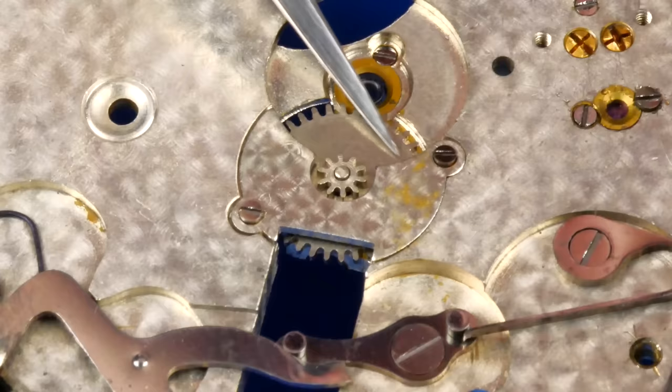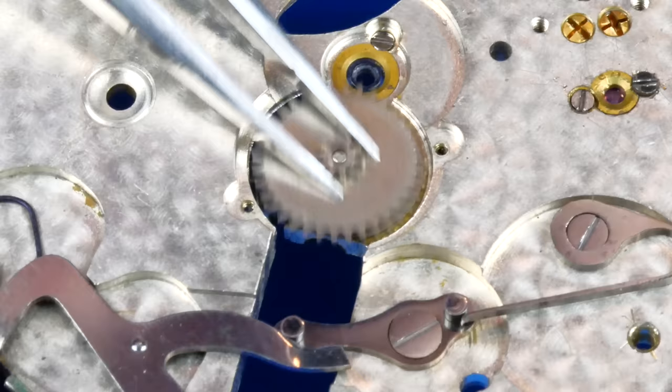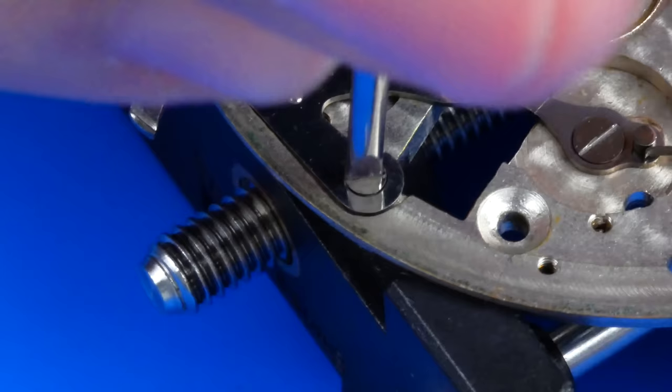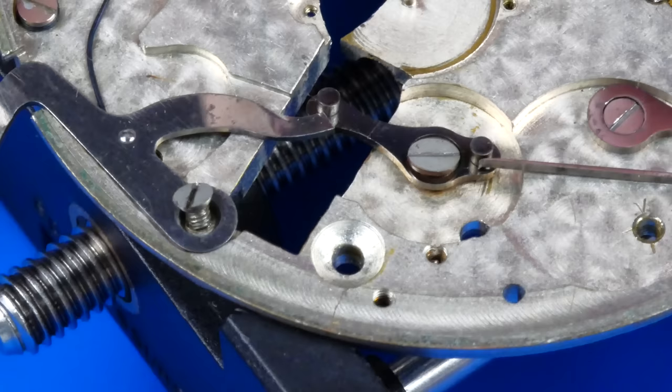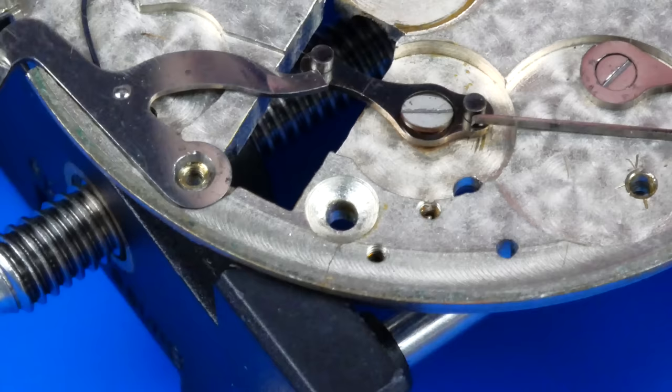The small bridge plate over the minute wheel is removed along with the minute wheel. The setting lever and yoke are uninstalled.